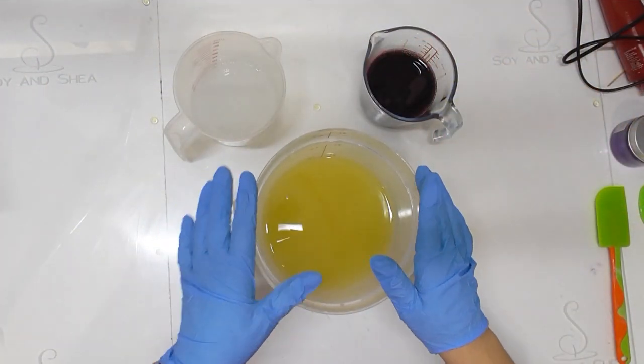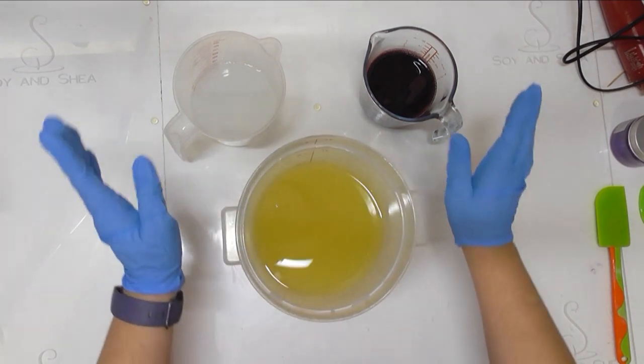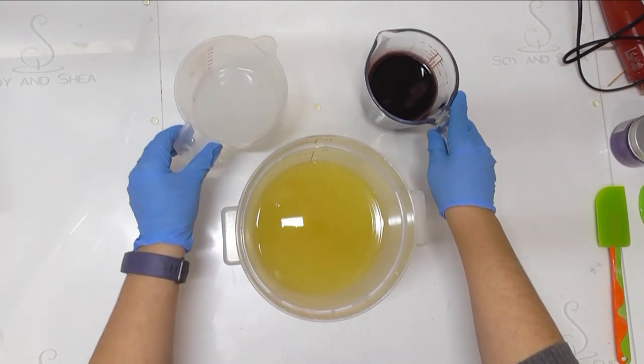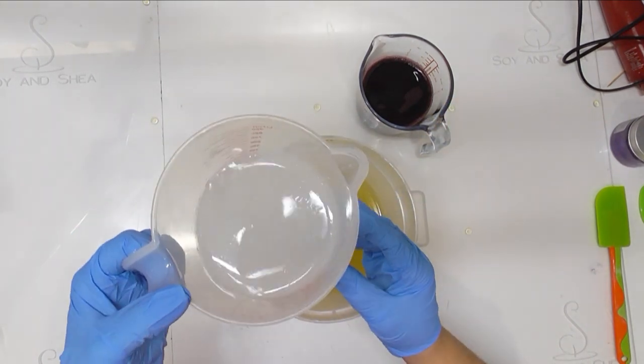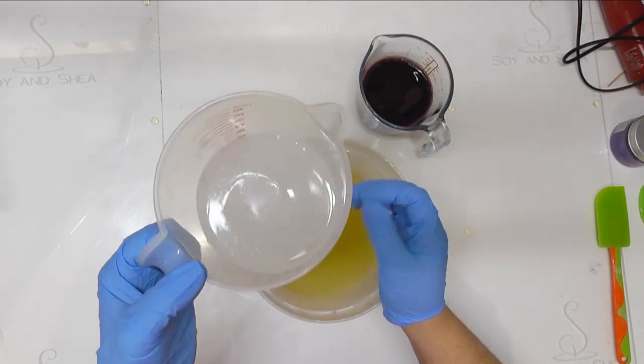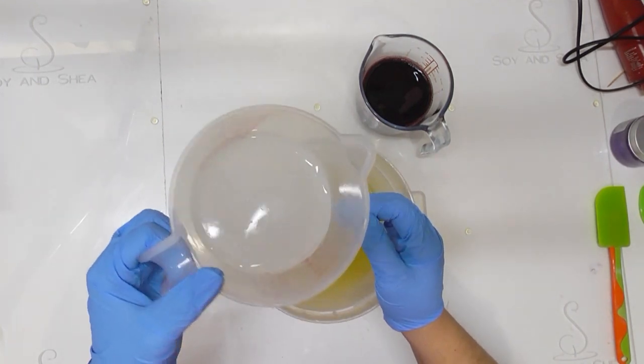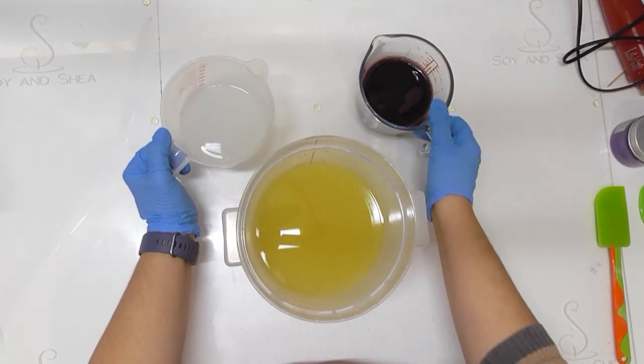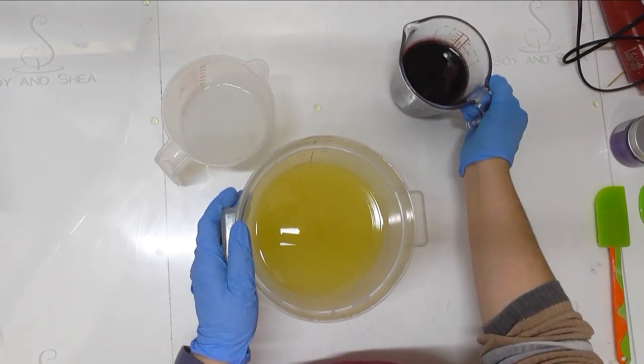If you caught yesterday's video, you would have seen that I was preparing some wine and my lye solution for this soap. I have my lye solution here. It's still a bit cloudy and really cold now because it's been sitting for more than 24 hours. It's still cloudy because I have that one-for-one ratio, so it will look a lot thicker and heavier too. Then I have all of the red wine weighed out for this soap as well.